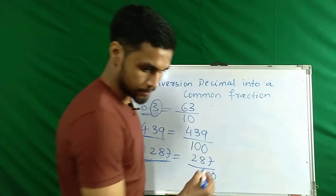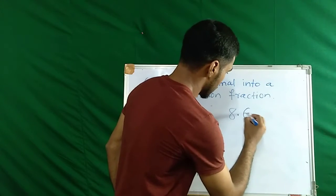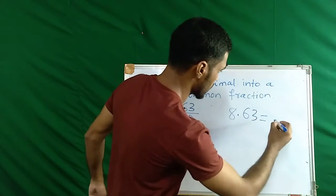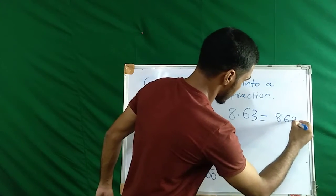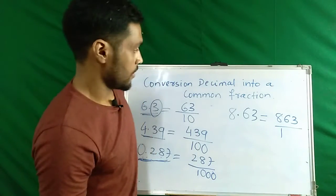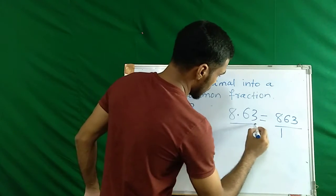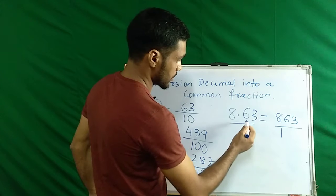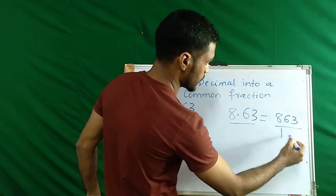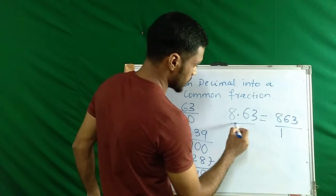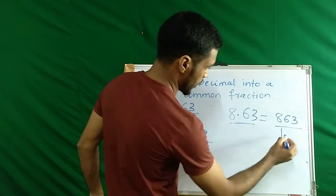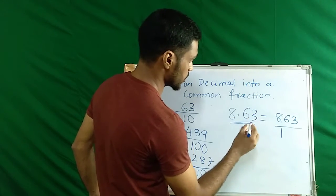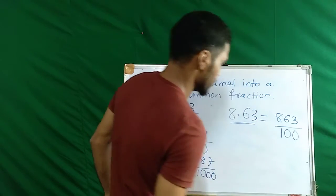Let us take some more examples. We have 8.3. To convert this decimal into a common fraction, we write 1. As per the decimal place, we write zeros on the right side of the 1. If a decimal has 3 decimal places, write 3 zeros; if it has 2 decimal places, write 2 zeros. In this decimal we have 2 decimal places — 1 and 2 — so we write 2 zeros on the right side of the 1.